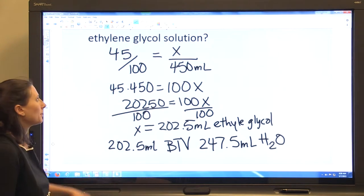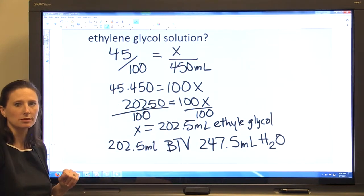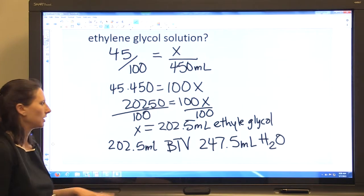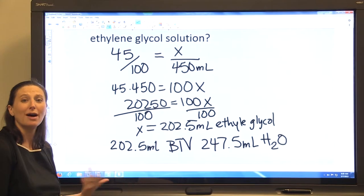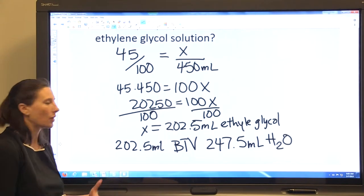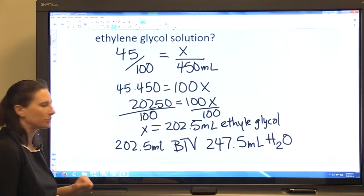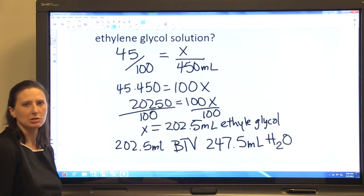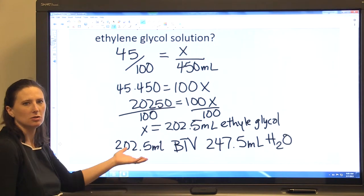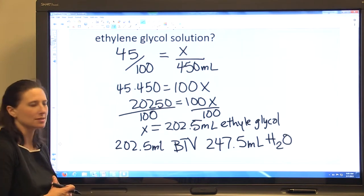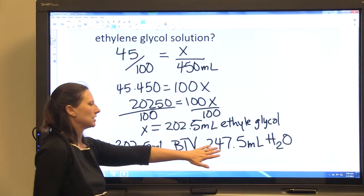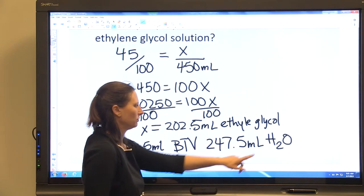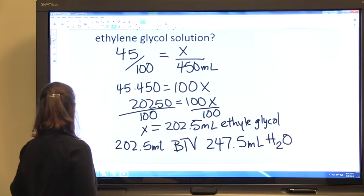So you always need to remember when you're asked how to prepare a solution that you're not just telling me how much of the solution is ethylene glycol but how to prepare that solution. If you just put 202.5 mLs of ethylene glycol into a container that's not a 45% solution.